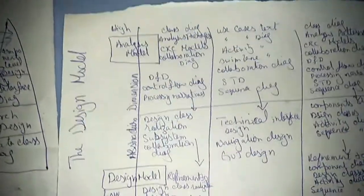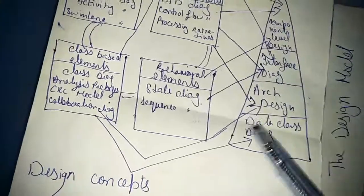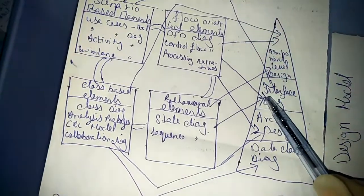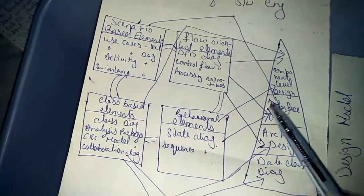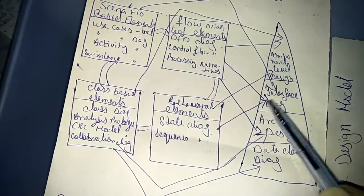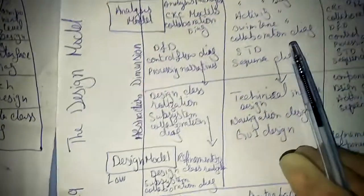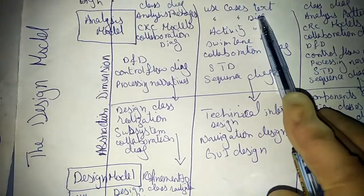Here you can see the interface elements. The interface elements include DFD, scenario-based elements, and behavioral elements. Interface elements also map to scenario-based inputs.